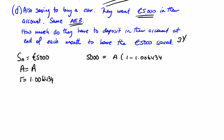So Sn, £5,000, is equal to a times 1 minus 1.006434. Let's check, it was actually 3 years they want it in 3 years, so n is 36, to the power of 36 over 1 minus 1.006434.